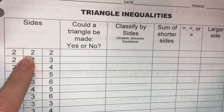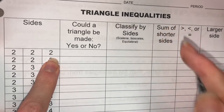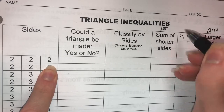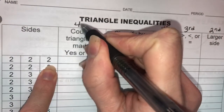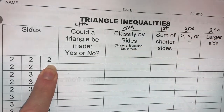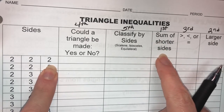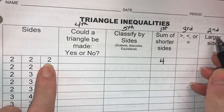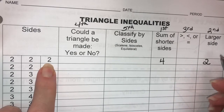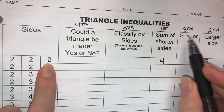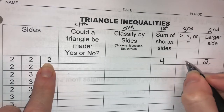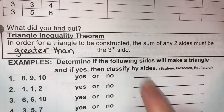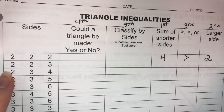So if the sides are 2, 2, and 2, we want to do the sum of the shorter sides. All the sides are the same here, so we can add any two. 2 plus 2 gives me 4. The third side, the larger side, is going to be 2. So is the sum of the shorter sides greater than, less than, or equal to the larger side? Well, 4 is greater than 2. So could a triangle be made? If the sum of any two sides is greater than the third side, then yes, a triangle could be made.